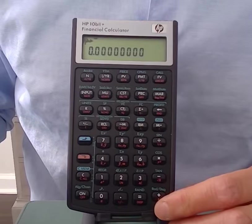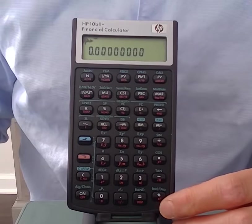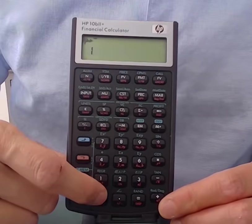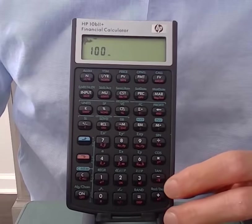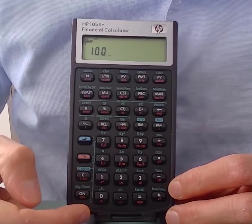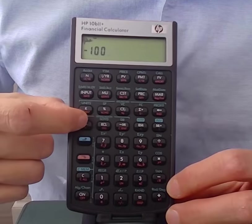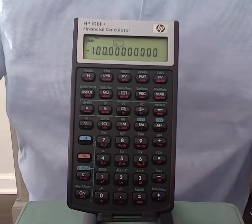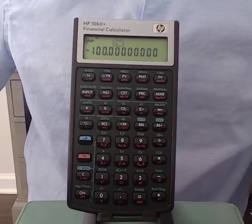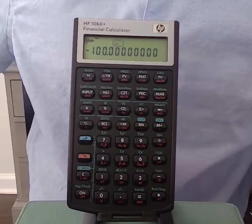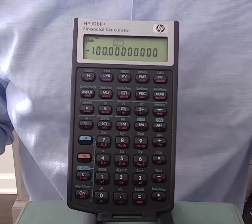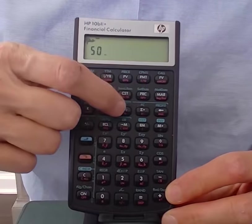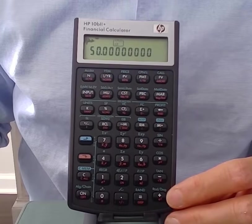So we would start by listing our cash flows using the CF button. So let's suppose that my first cash flow period zero is negative 100. So I'm going to press 100 and then I'm going to press the plus minus key to make that negative and then press CF. Notice the calculator flashes CF zero, meaning the cash flow period zero is negative 100. Now let's suppose that the next cash flow is 50. So I'll put in 50 CF. Now that's stored as a period one cash flow.